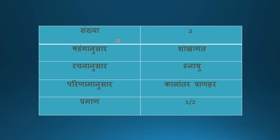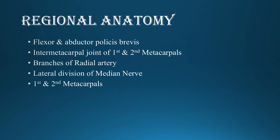Sankhya: 2 in number. Shadanganusara: it is Shakhagata. Rachnanusara: it is Nayumarma. Parinama: it is Kalantara Pranahara Marma, and its measurement is half Anguli. Regional anatomy in the hand: Flexor and Abductor Pollicis Bravis, inter-metacarpal joint of first and second metacarpals, branch of radial artery, lateral division of median nerve, first and second metacarpals.